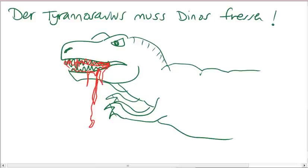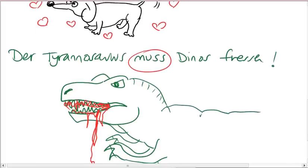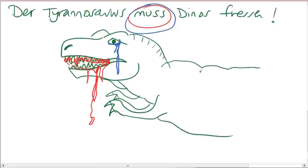So, er muss Dinos fressen, deshalb hat er blutige Zähne. He has no choice, he's a carnivore. So again, the German verb müssen means to have to. It doesn't mean exactly the same thing as must in English. It's a slightly different meaning. He has to. So even if he really doesn't want to, maybe he's conflicted, but he has to because he's a carnivore and he has those teeth.